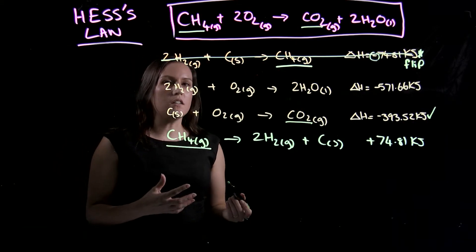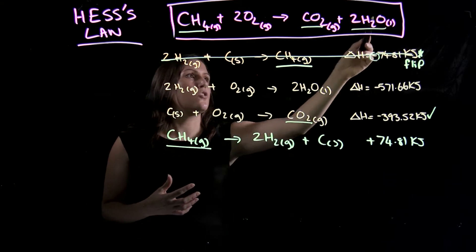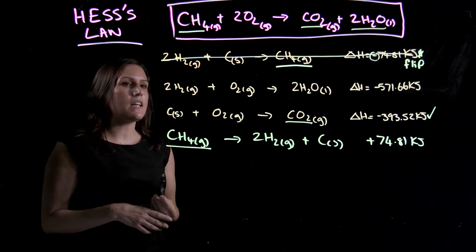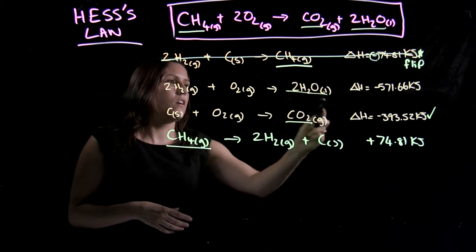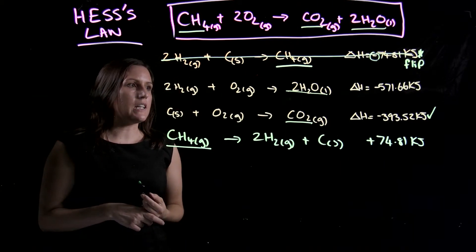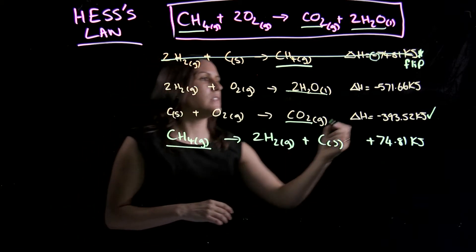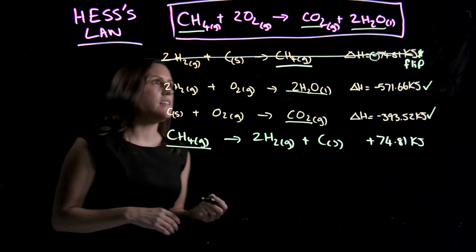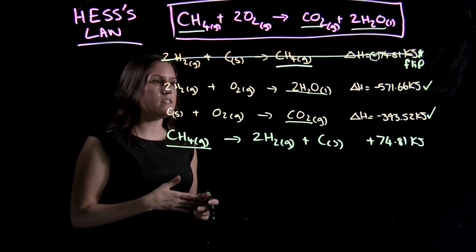So now I'm looking at water. Okay, so I've got two water molecules in the liquid state, so then scanning through two water molecules in the liquid state. So this one's good. I want to lock this one in. I don't need to change it. It's the right amount, and it's on the right side.